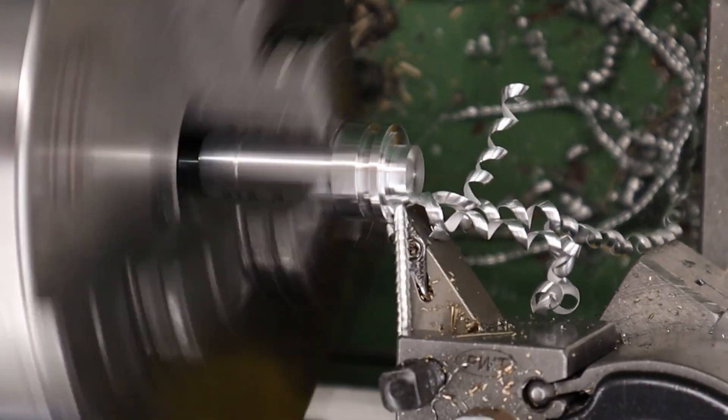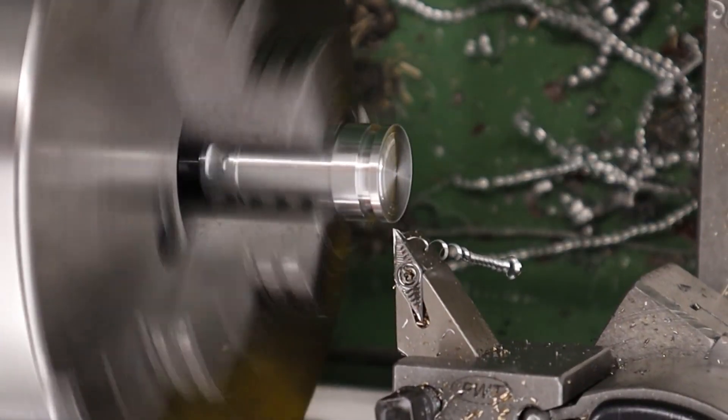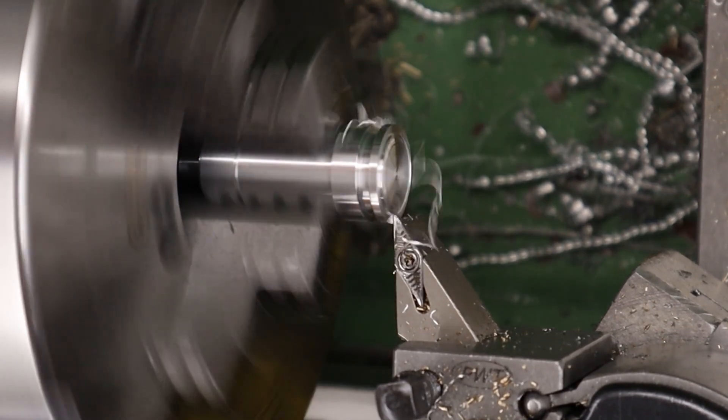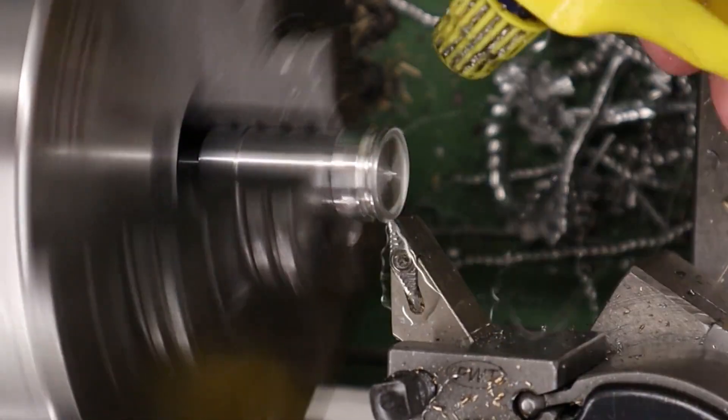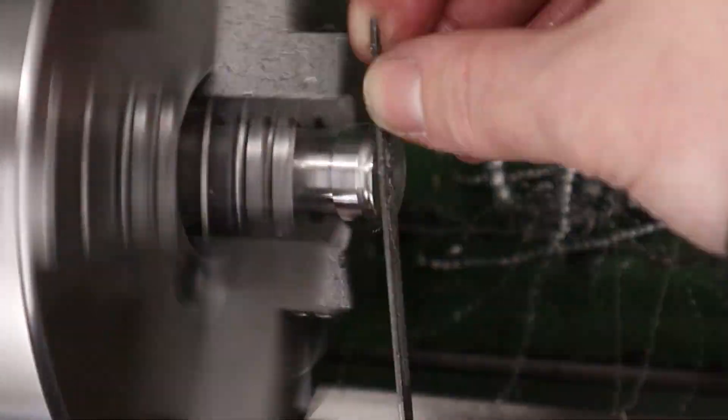Once that's done we can move the part back over to the lathe and start work on the other side. First thing to do is remove the spigot that we use to hold the part in both the lathe and the mill for the previous operations and then start work on the rest of the internal features.